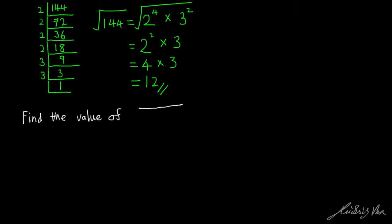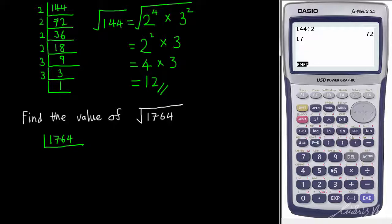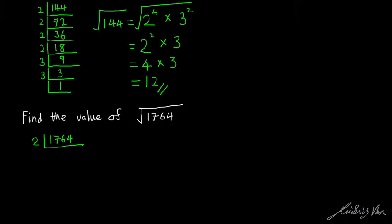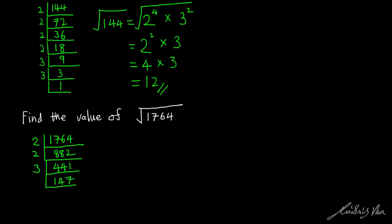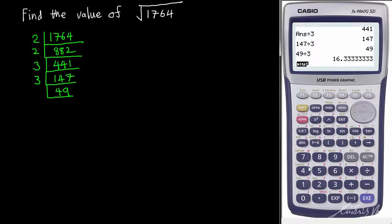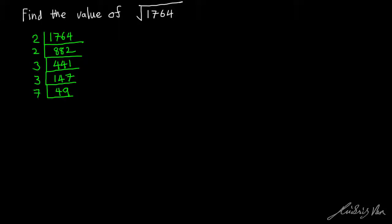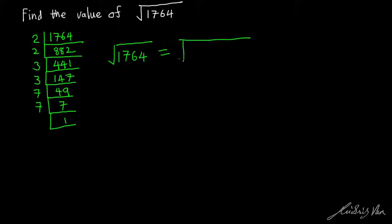Square root of 1764. 1764 is an even number, so we can divide it by 2 — we can always use our calculator to do the division. We get 882. 882 divided by 2 gives us 441. Because 441 cannot be divided by 2, we move on to the next prime number. 441 divided by 3 gives us 147. 147 divided by 3 gives us 49. 49 divided by 7 gives us 7, and 7 divided by 7 gives us 1. So square root of 1764 equals square root of 2 to the power of 2 times 3 to the power of 2 times 7 to the power of 2.